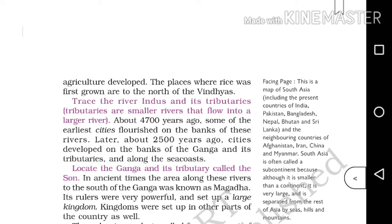Next, we discussed Garo hills — the place where agriculture was developed. Then River Indus and its tributaries: about 4700 years ago cities developed on the banks of River Indus. After villages in Suleiman and Kirthar hills, the development of cities happened 4700 years ago on the banks of the Indus, and about 2500 years ago on the banks of River Ganga and along the sea coast. On the Ganga and its tributary Son, the kingdom of Magadha developed — a powerful and large kingdom — and many other kingdoms developed throughout the country.